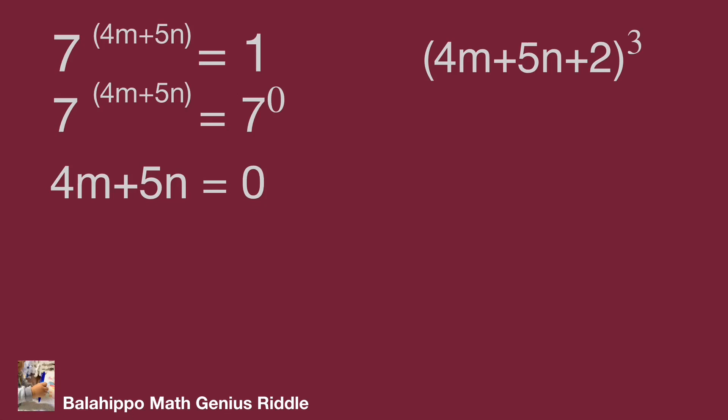4m plus 5n plus 2 equals 2. Substitute 4m plus 5n equals 0. We get 2 cubed equals 8. That's the answer.